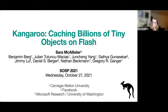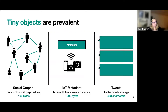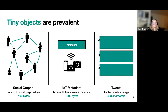In Kangaroo, we're talking about caching billions of tiny objects. Why are we focusing on tiny objects? It's because they're prevalent. You can see them in social graphs, such as the Facebook social graph, where the edges are on average 100 bytes. Or we can see it in IoT metadata, where you have many sensors and each sensor has metadata averaging around 300 bytes in Microsoft Azure. Or we can see them in Twitter tweets, which average about 33 characters per tweet. All of these objects are really tiny, and there's a lot of them, which means we need a massive infrastructure to provide them at scale.